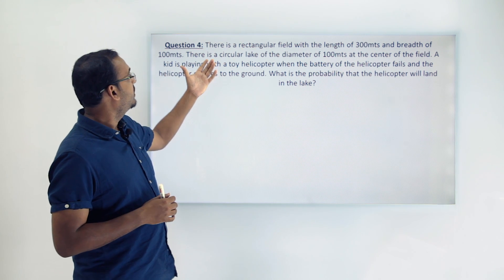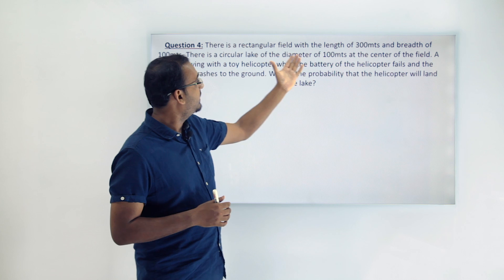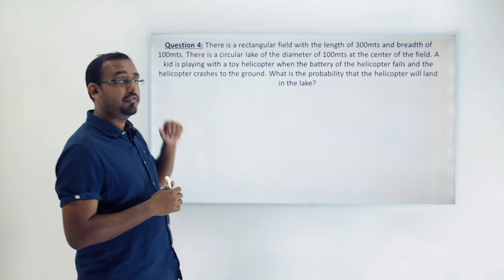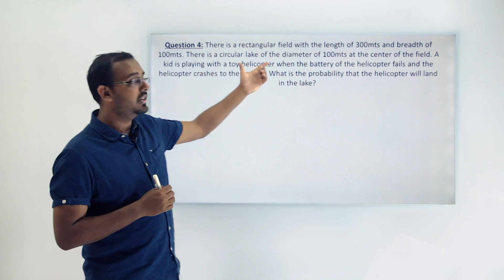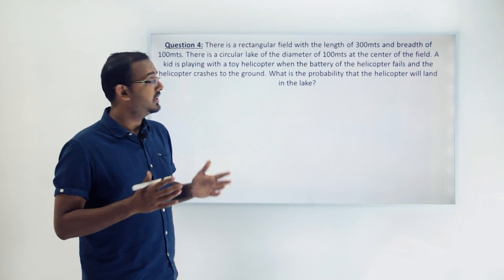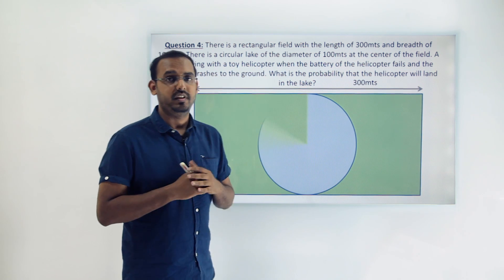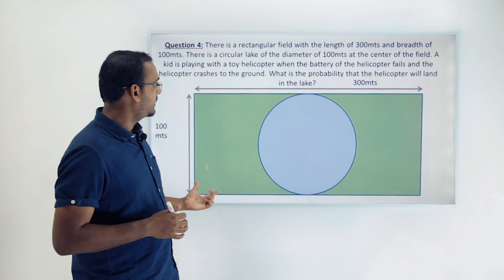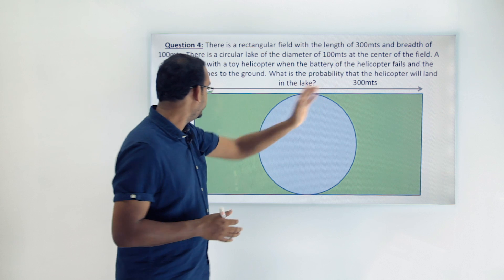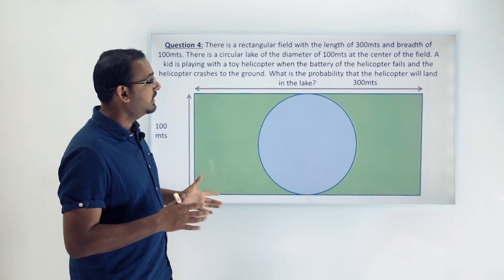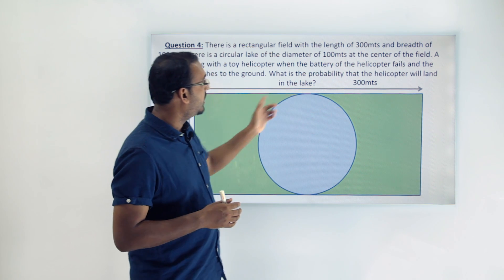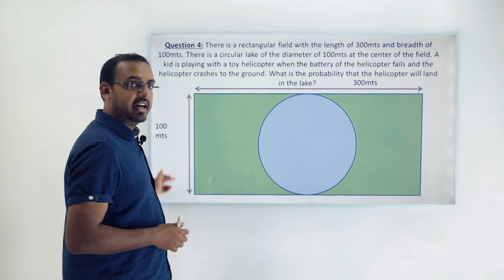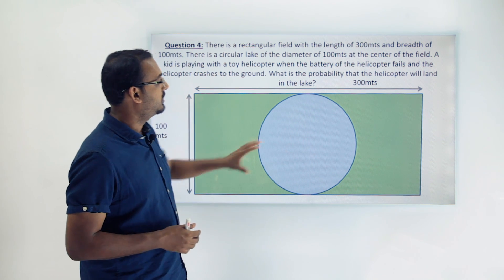In this question we see that there is a rectangular field with a length of 300 meters and a breadth of 100 meters. There is a circular lake of diameter 100 meters at the center of the field. Looking at this diagram, all the green area comprises the field — 300 meters by 100 meters — and the circular lake with diameter 100 meters is at the center.